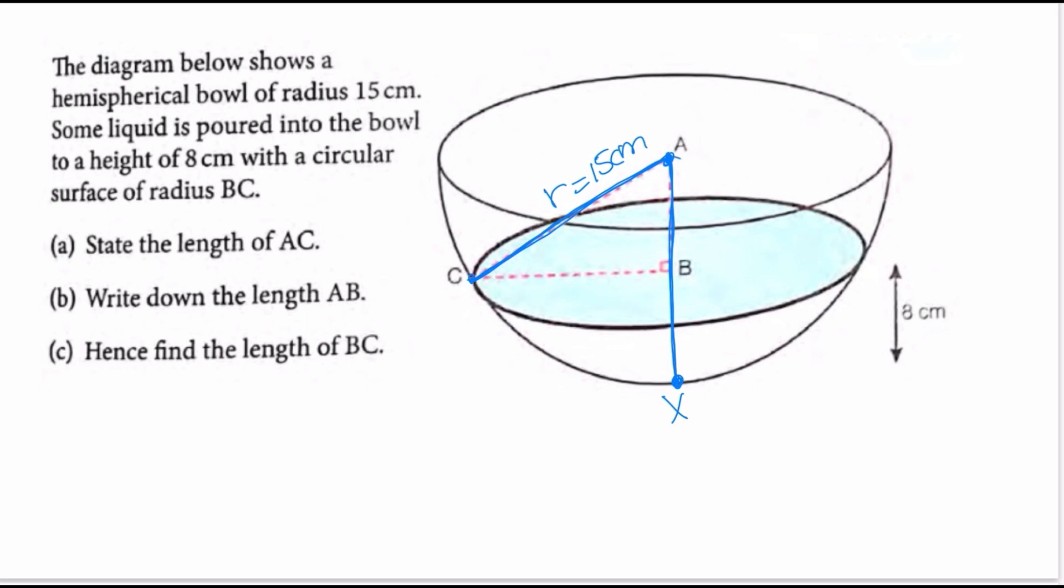All the way around, all of these are radii because they're coming from the center. And even though they don't look like they're all going to be 15, they are because of the way it is drawn.